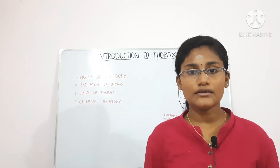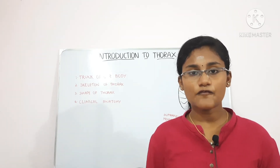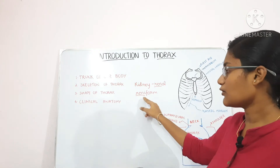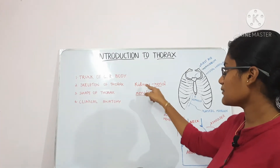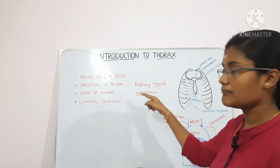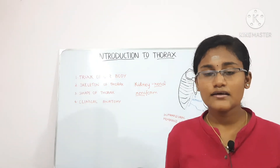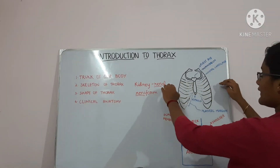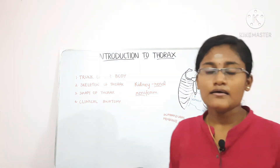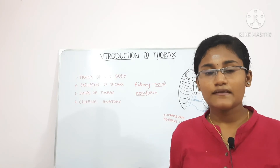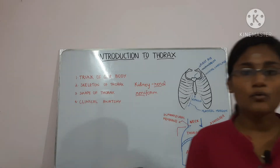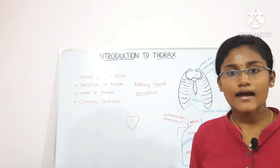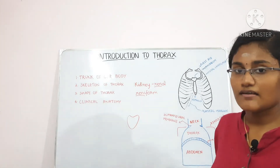The transverse section of the thorax is reniform — meaning bean-shaped or kidney-shaped. You can remember this because 'reniform' relates to 'renal,' both starting with 'ren.' In the adult thorax, the transverse diameter is greater than the anterior-posterior diameter. In infants below 2 years, the transverse section is circular. In quadrupeds, the shape is like a heart, where the anterior-posterior diameter is larger than the transverse diameter.